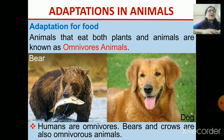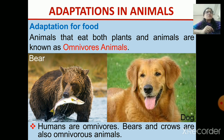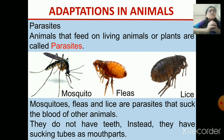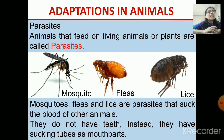Another type are omnivore animals — they eat both plants and animals. Humans are also omnivores, and bears and crows are also omnivores. There is another type of animal. They feed on living animals. They take the blood from the animals on which they live.